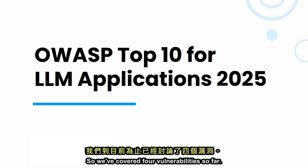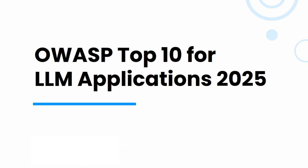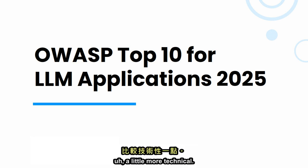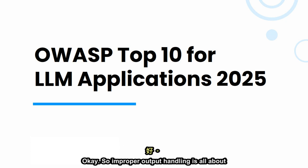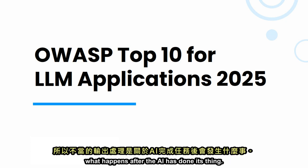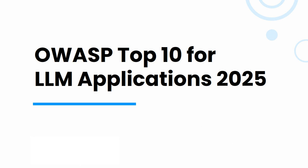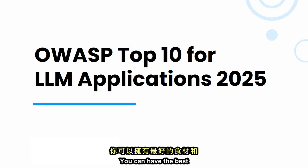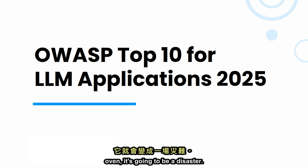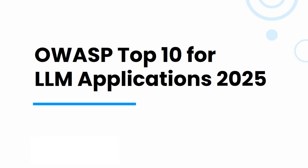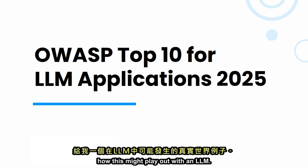This highlights the fact that AI security is not just about protecting the AI itself — it's also about protecting the data it's trained on and the entire ecosystem it interacts with. Next up, we've got improper output handling. This is about what happens after the AI has done its thing — after it's generated some text or code or whatever it's been asked to do. The problem is that output might not always be safe to use directly. You need to treat all LLM outputs as potentially untrusted.